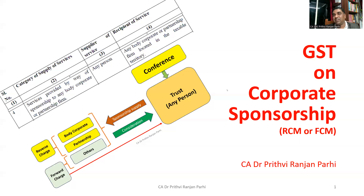In this video, I have made an attempt to explain the concept of applicability of GST on corporate sponsorships. For that purpose, I have to refer to a particular notification. When I say we will be discussing GST applicability, I exactly mean we'll be only talking about whether GST will be levied under RCM or FCM. RCM stands for Reverse Charge Mechanism and FCM stands for Forward Charge Mechanism.